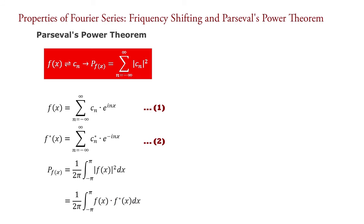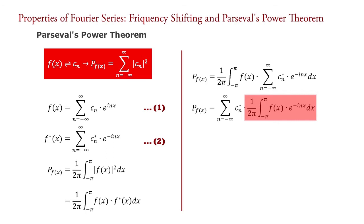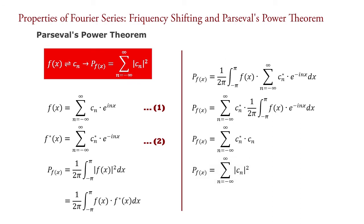Substituting the value of f(x)* from equation 2, we have P of f(x). By rearranging the terms, this part is equal to C_n. Therefore, writing C_n for this part, the equation becomes P of f(x) equals summation from n equals minus infinity to infinity of C_n* times C_n, which equals summation from n equals minus infinity to infinity of the modulus of C_n squared.